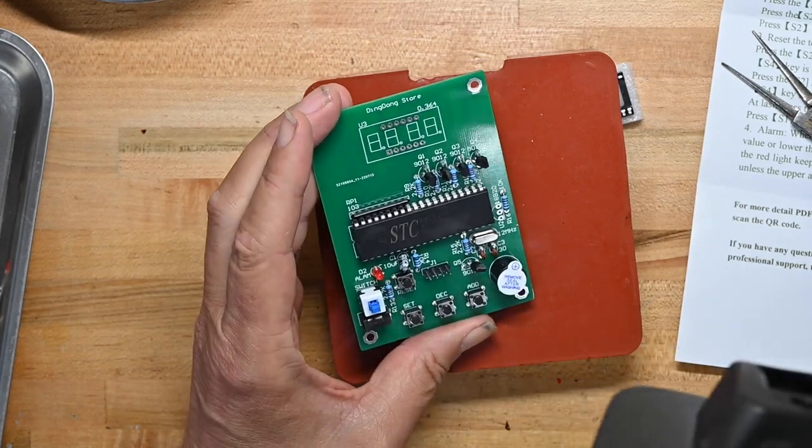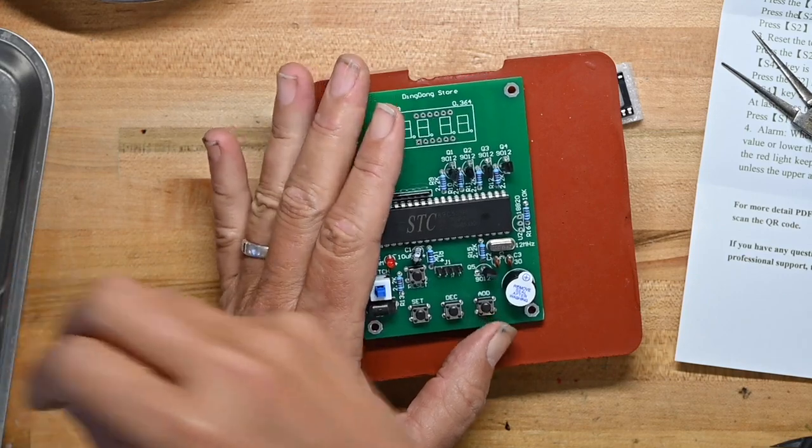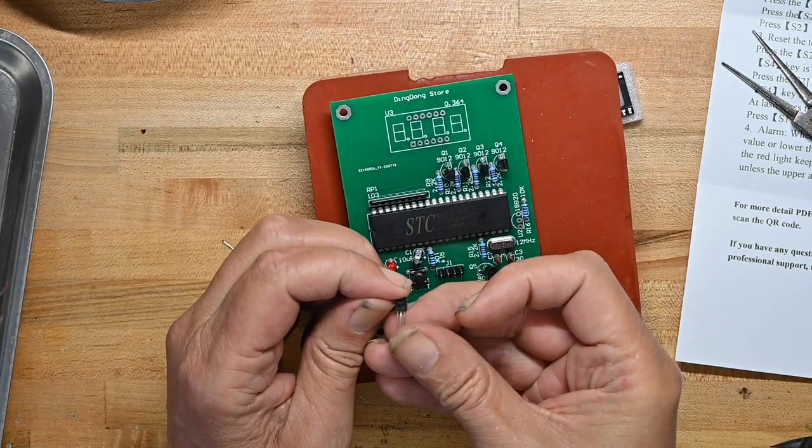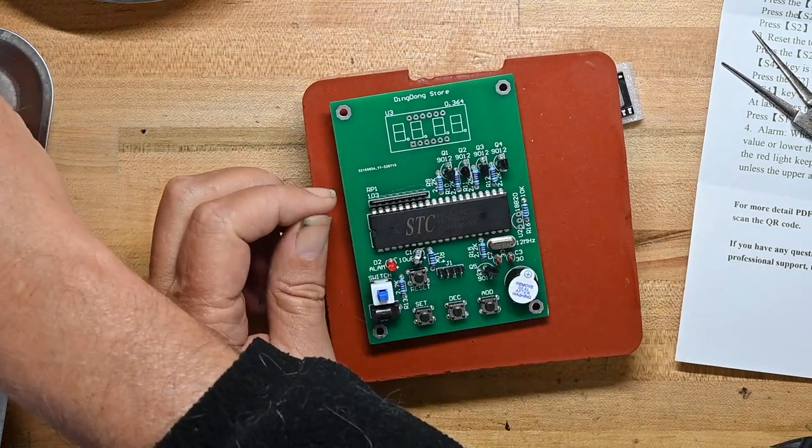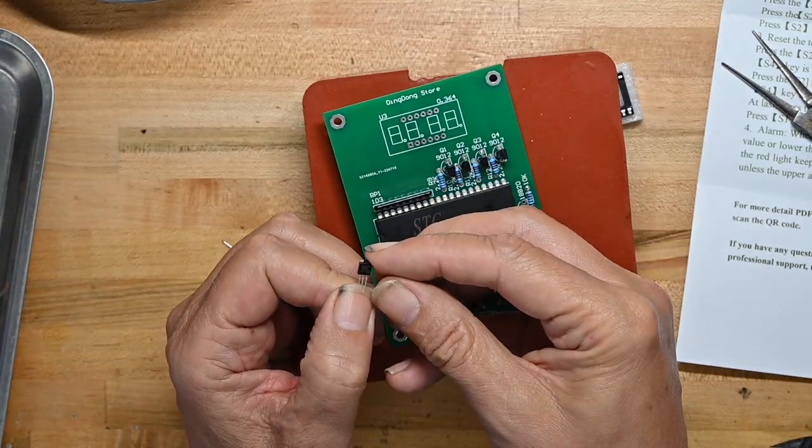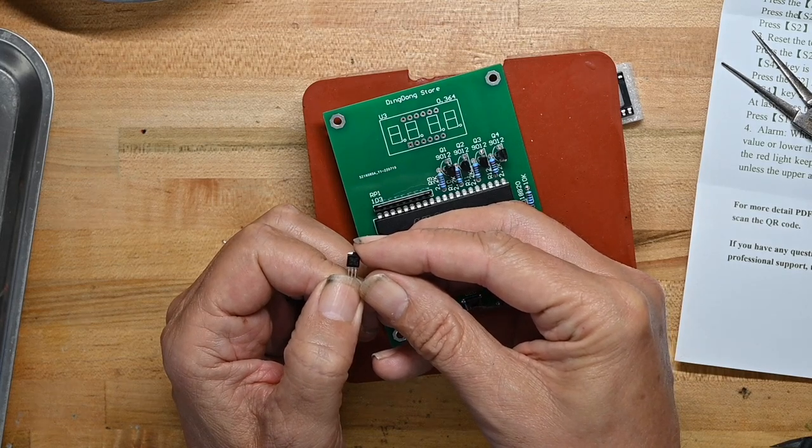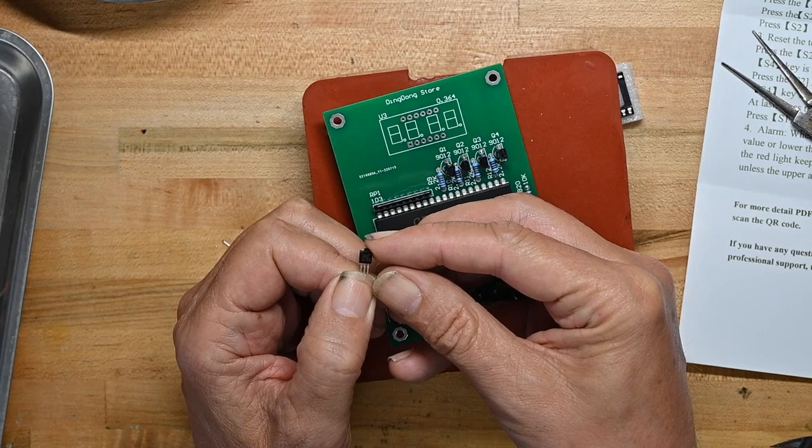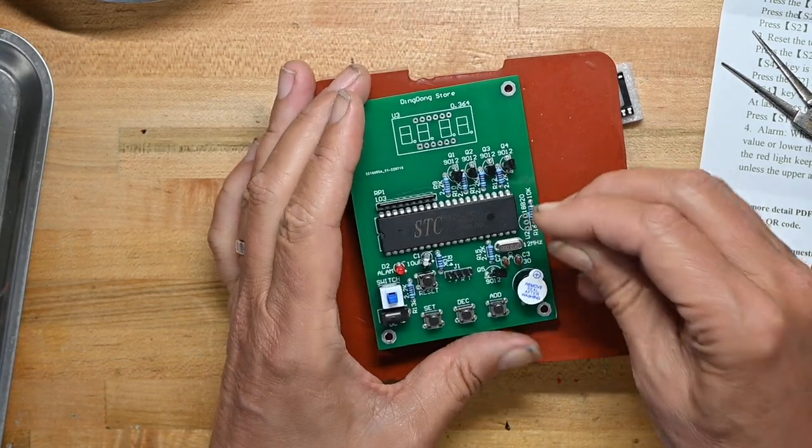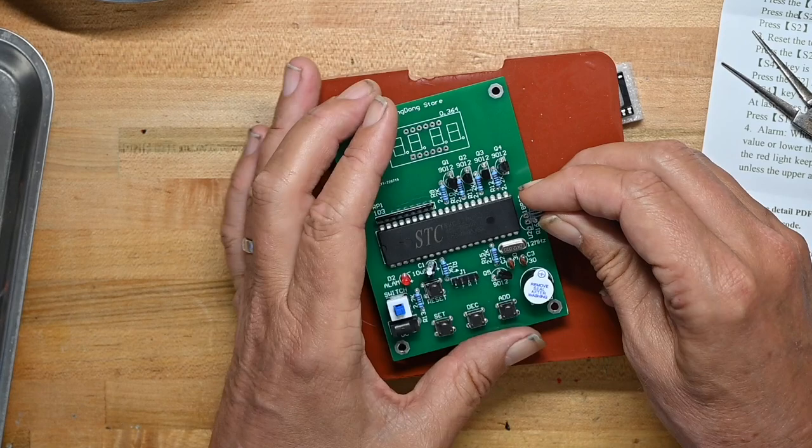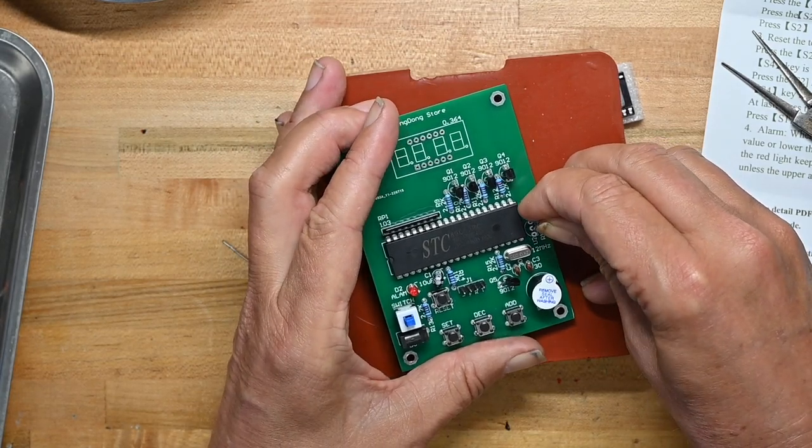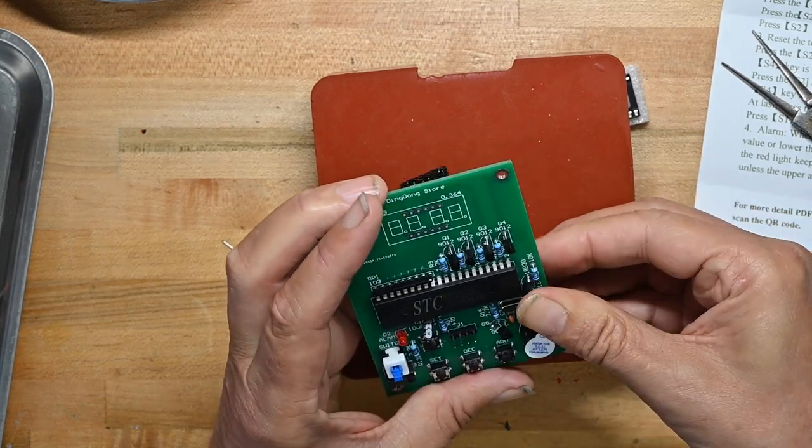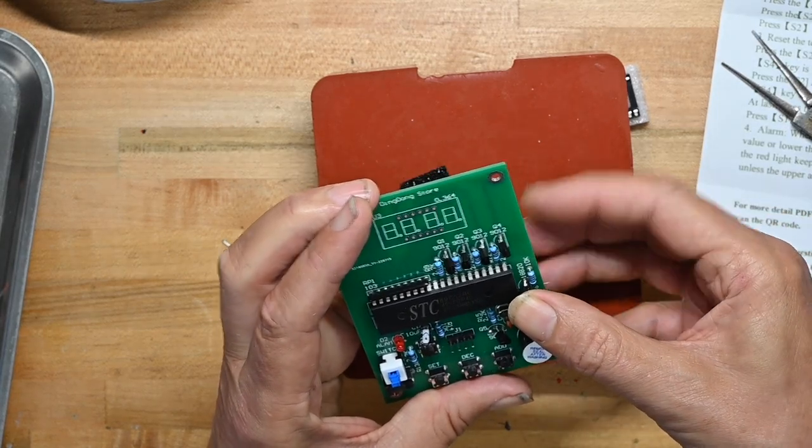And now, we're going to put the temperature sensor on. And that is the DS18B20. It goes right here. That's the actual temperature sensor. Solder that for a second.